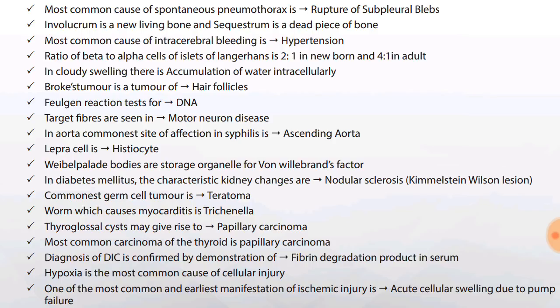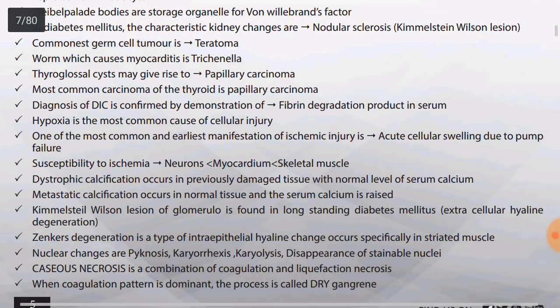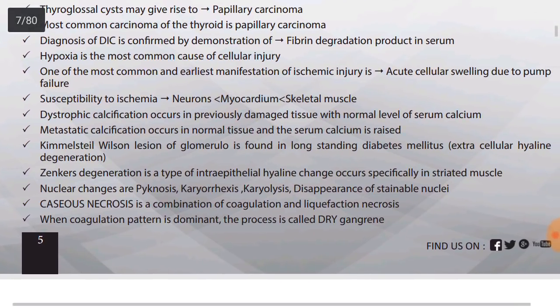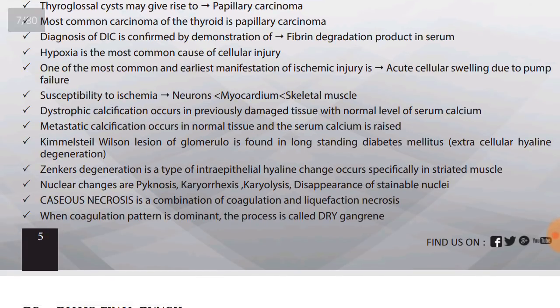In diabetes mellitus, the characteristic kidney changes are nodular sclerosis — that is Kimmelstiel-Wilson lesion. Commonest germ cell tumor is teratoma. The worm which causes myocarditis is Trichinella. Thyroglossal duct cyst may give rise to papillary carcinoma — not medullary. Most common carcinoma of thyroid is papillary carcinoma. Diagnosis of DIC is confirmed by demonstration of fibrin degradation products in serum.